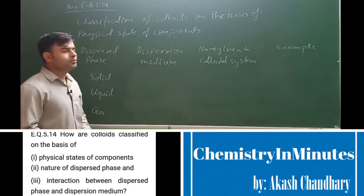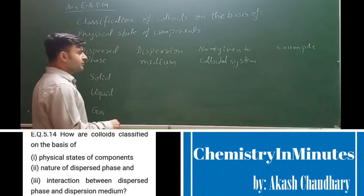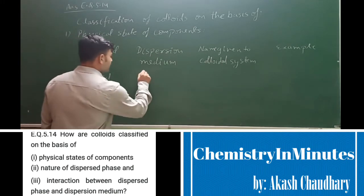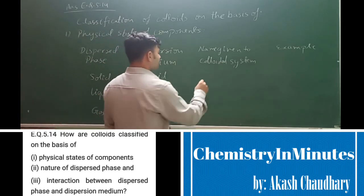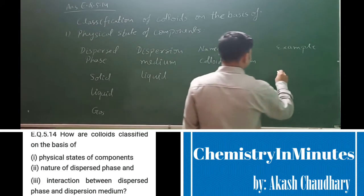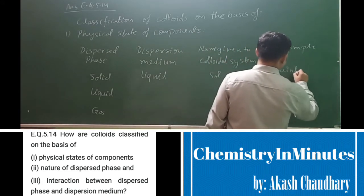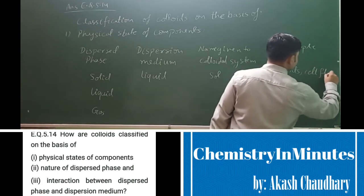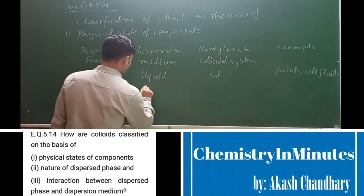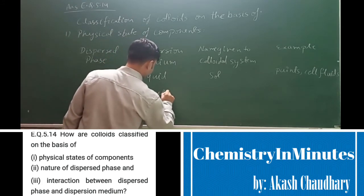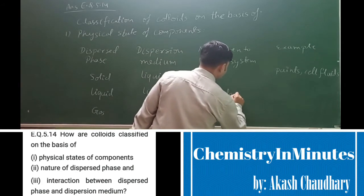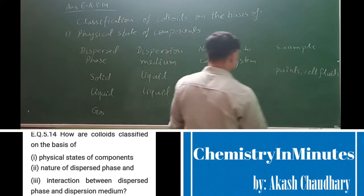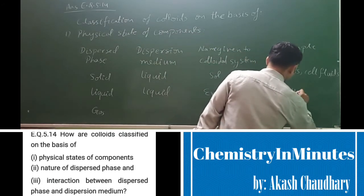Now if we take the dispersion medium to be liquid, we get different types of colloidal systems. For a solid dispersed phase with a liquid dispersion medium, the name given to such a colloidal system is sol. Examples are paints and cell fluids. For a liquid dispersed phase with a liquid dispersion medium, the name given to such a colloidal system is emulsion. Examples are milk and butter.